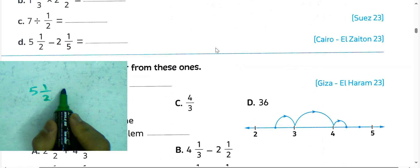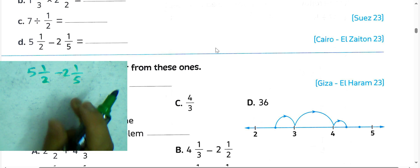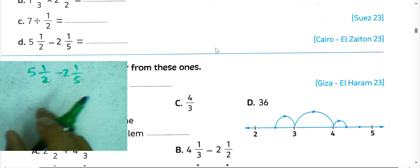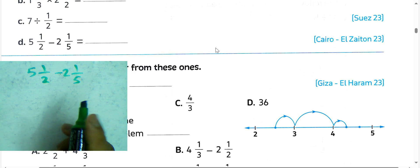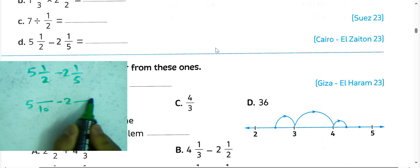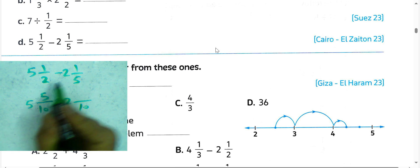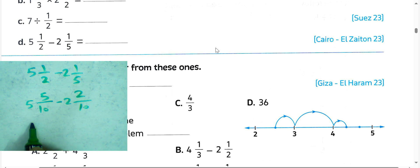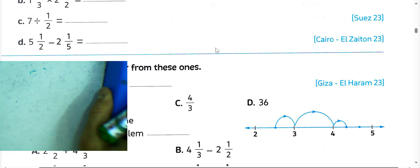5 and one-half subtract by 2 and one-fifth. We can write the least common multiple between the two fractions. Since 5 and 2 are relatively prime numbers, the LCM is 5 times 2 equals 10. In the numerator: 2 times 5 is 10, 5 times 1 is 5, 2 times 1 equals 2. Then 5 minus 2 equals 3, so the result will be 3 and 3 over 10.